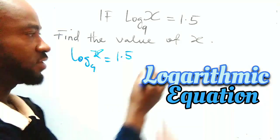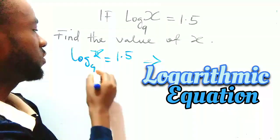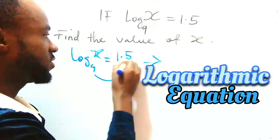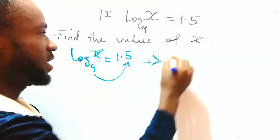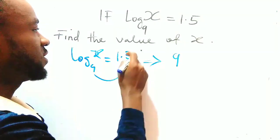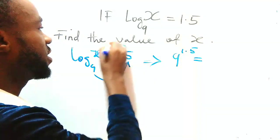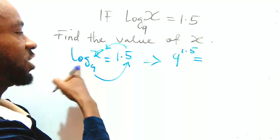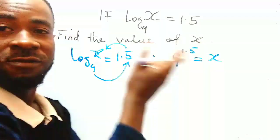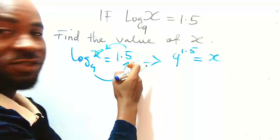We are going to convert this to indices form. So how do we do that? We take this base, raise it to the number at the right hand side. So the base here is 9, I'm going to raise it to 1.5, and then I equate it to the antecedent - the number or term attached to this log. That is how to convert from logarithm to indices: you take the base, raise it to the number at the right hand side, equating to the antecedent.